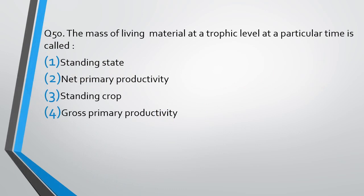Question number 50. The mass of living material at a trophic level at a particular time is called: standing state, net primary productivity, standing crop, or gross primary productivity. The correct answer is option 3, standing crop.